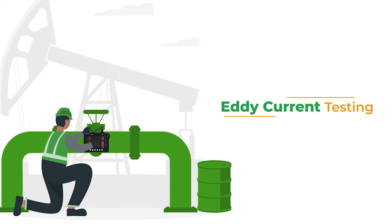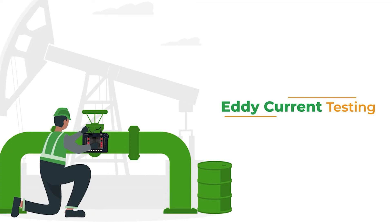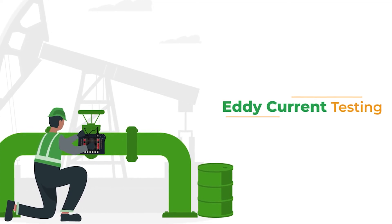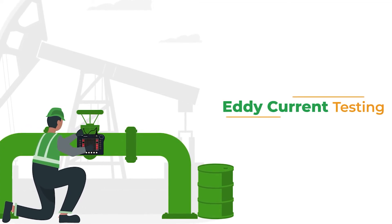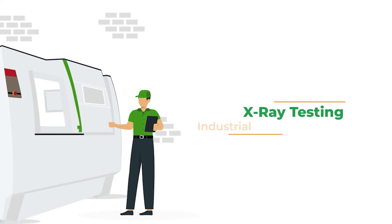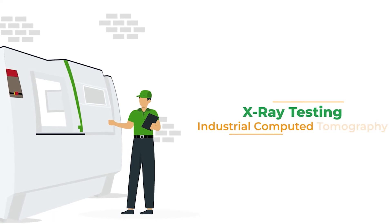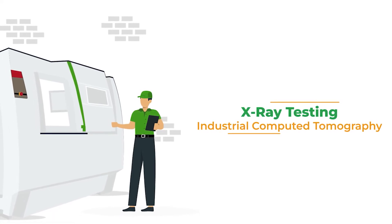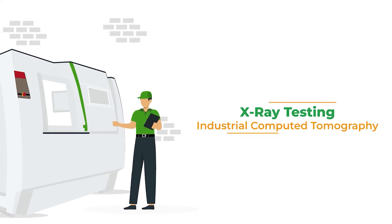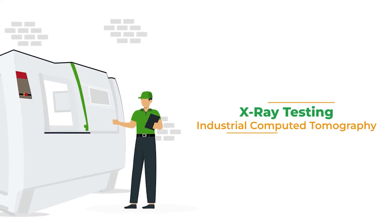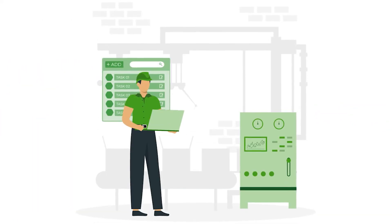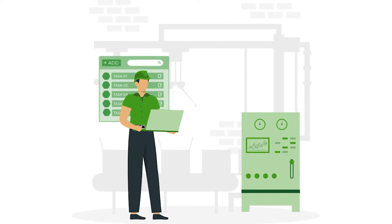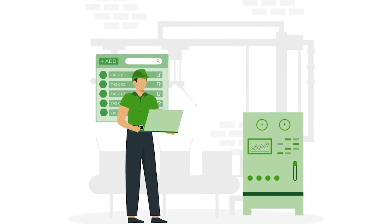Eddy current testing applies an electrical current to coils in order to measure consumption and identify anomalies. X-ray inspection and industrial computed tomography are used to generate detailed images of a component's interior to find faults and defects.